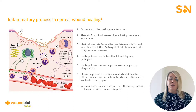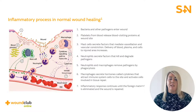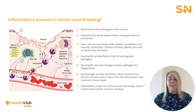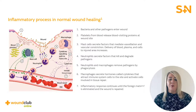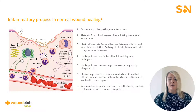This image takes you through each stage of the inflammatory process. It is here where wounds get stuck due to abnormal wound healing. Firstly, bacteria and other pathogens enter the wound. Platelets then release blood clotting proteins to stem any bleeding. Mast cells secrete factors which control vasodilation and vasoconstriction, and as a result blood plasma and other cells increase. Neutrophils arrive at the scene of the injury and secrete factors that kill and degrade pathogens. Along with macrophages, phagocytosis continues until all of the pathogens are removed.